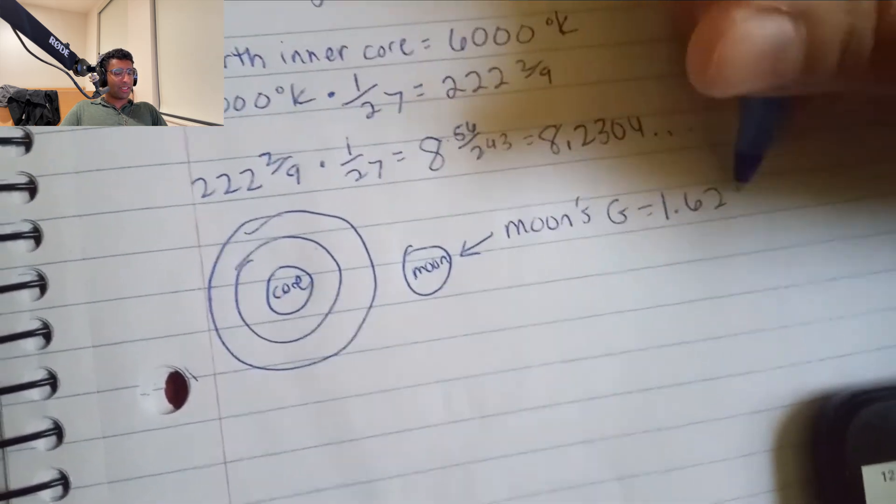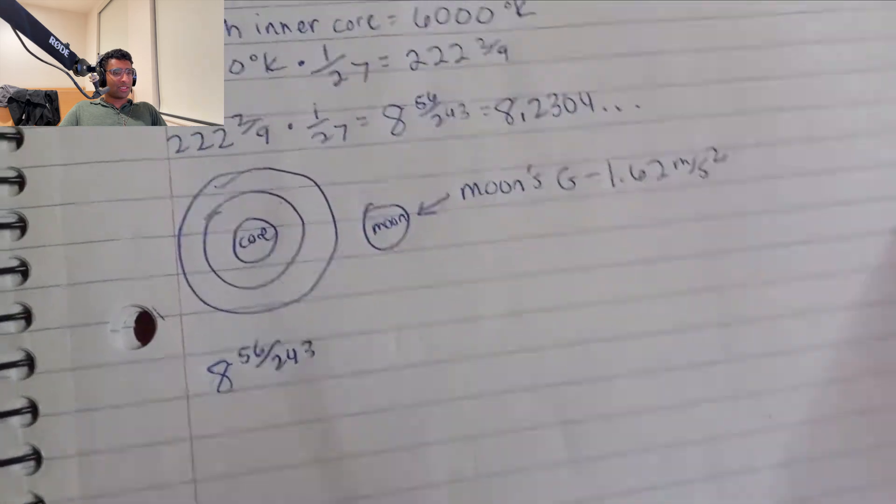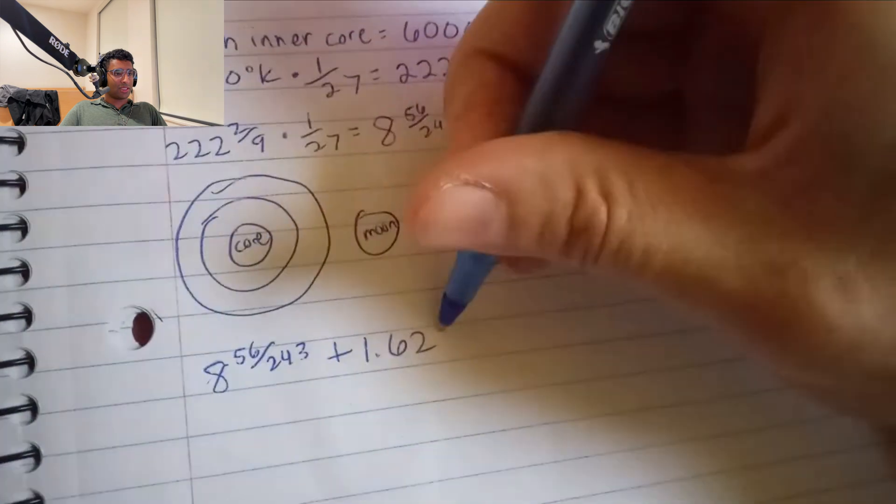The moon's gravity is 1.62 meters per second squared. Now, let's take the number that we received. And just like Einstein, just like a lot of the gravity exercises and all that, we're going to take this and compare it with another mass and another gravity, which is the moon.